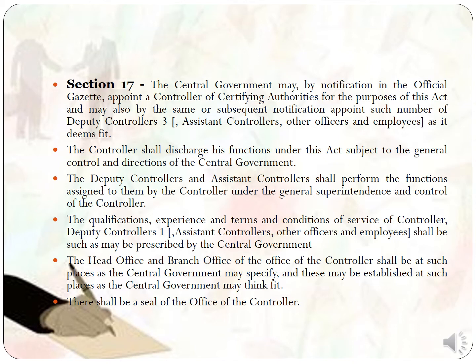The qualification, experience, and terms and conditions of service of the controller, deputy controller, assistant controller, and other officers and employees shall be as may be prescribed by the central government. The head office and branch offices of the controller shall be at such places as the central government may specify. There shall be a seal of the office of the controller. So basically, Section 17 talks about who a controller is, how they are appointed, and what their duties and terms are.